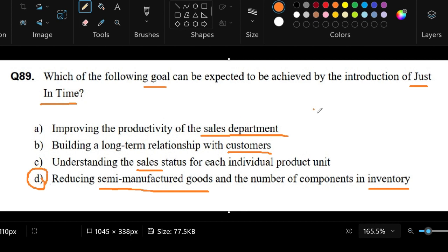Remember that we need to find the goal that can be achieved by introducing just-in-time. We know that just-in-time is a technique such that if you have components in your inventory, we can reduce the number of components just sitting in the inventory.